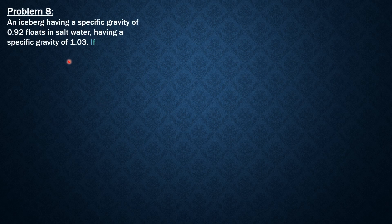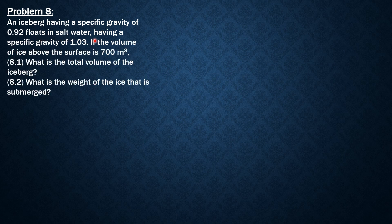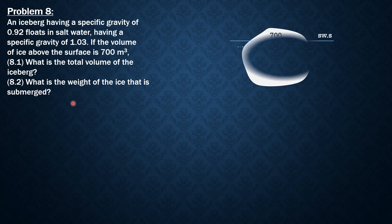An iceberg having a specific gravity of 0.92 floats in salt water having a specific gravity of 1.03. If the volume of ice above the surface is 700 cubic meters, what is the total volume of the iceberg? And what is the weight of the ice that is submerged? So let's have the figure.